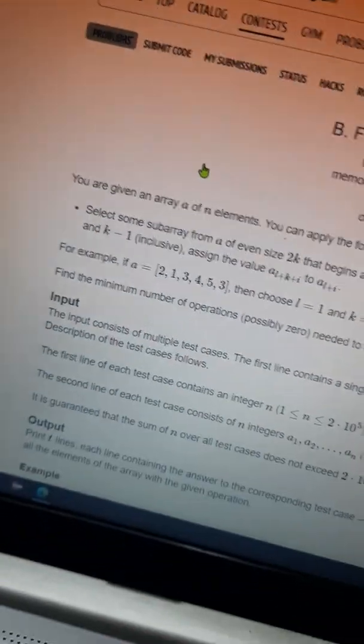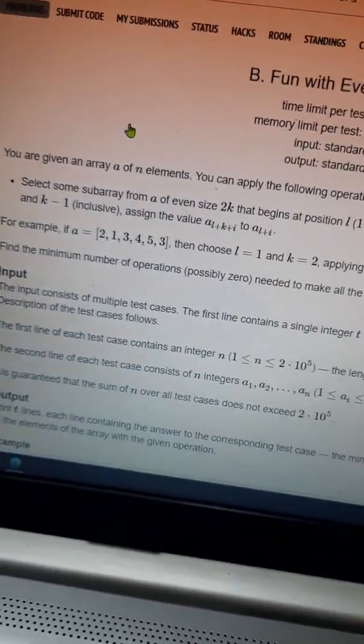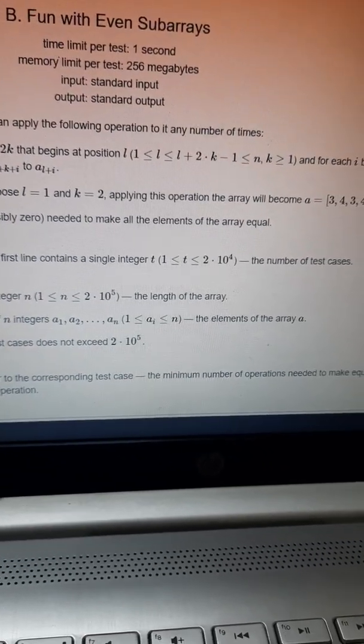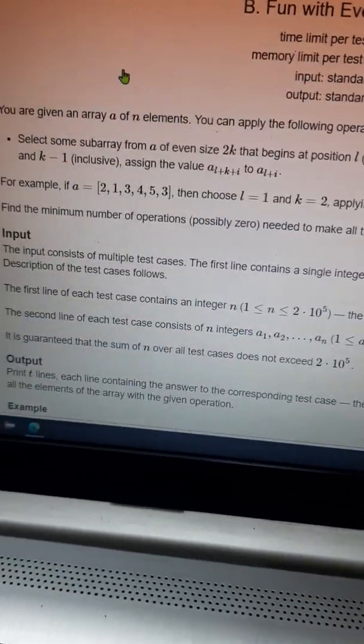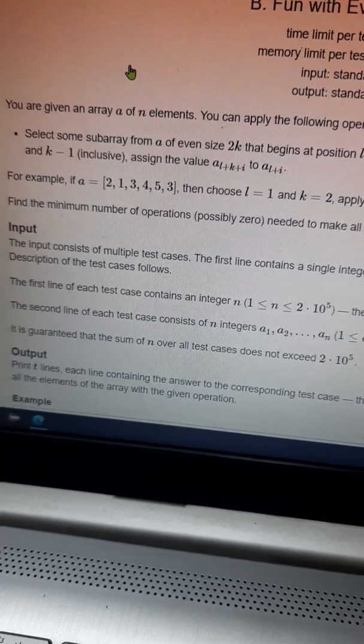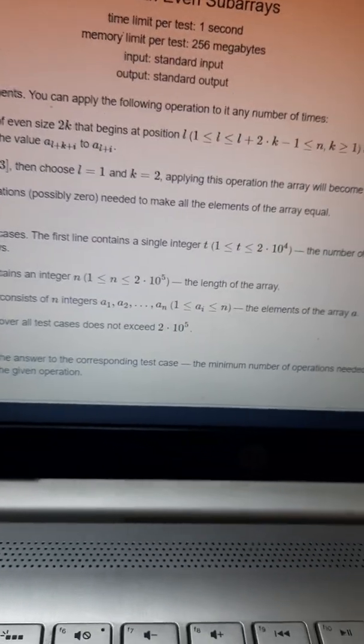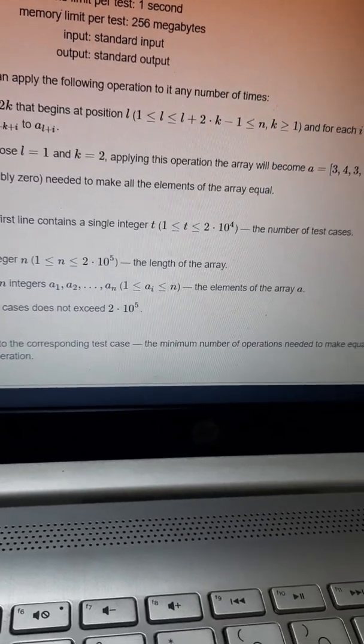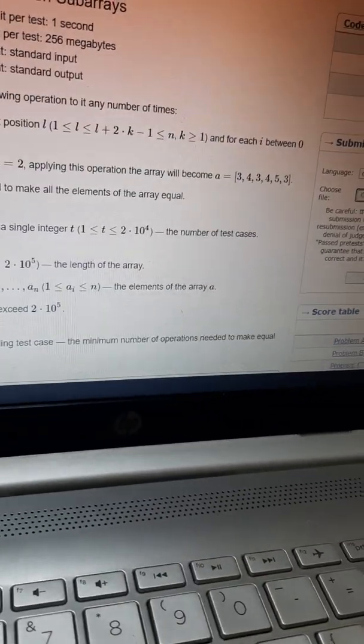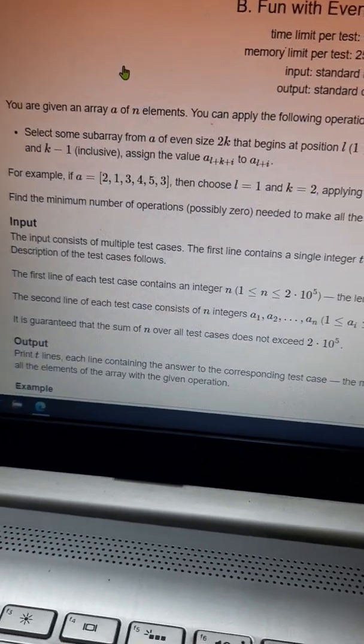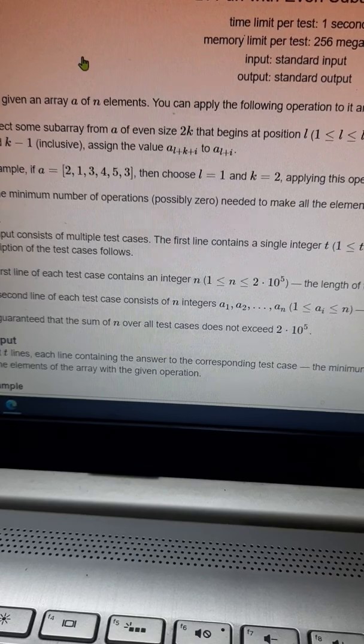Fun with even subarrays. You are given an array of n elements. You can apply the following operations any number of times: select some subarray from a of given size k that begins at position l. These are the constraints.